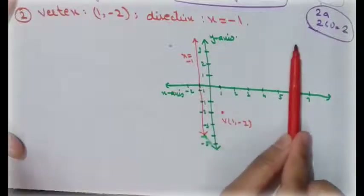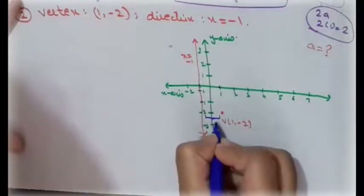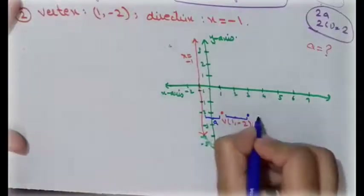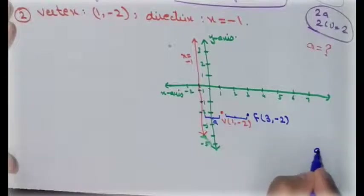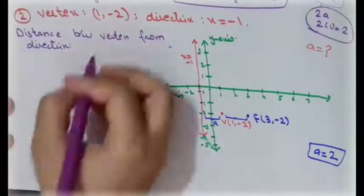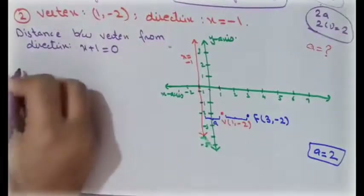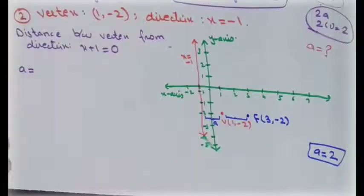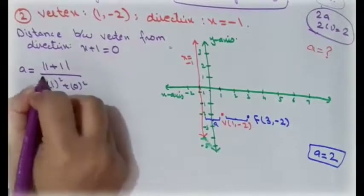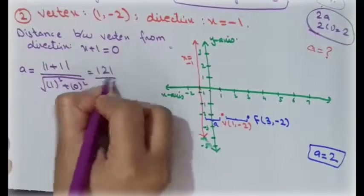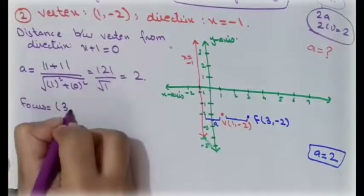The parabola opens away from the directrix and towards the focus. Assuming the distance from vertex to directrix is 'a', the focus point is (3, −2) and a = 2. We write the directrix as x + 1 = 0 and apply the distance formula: |1 + 1| / √(1² + 0²) = 2/1 = 2. So a = 2 is confirmed.